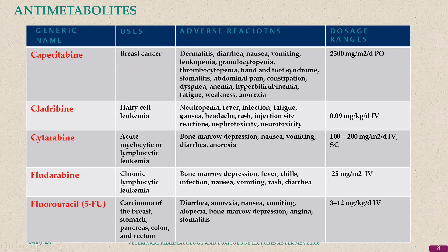Cladribine is used for hairy cell leukemia, and cytarabine is used especially in myelocytic anemia. Fludarabine is used in chronic lymphocytic leukemia. 5-fluorouracil is one of the commonly used antimetabolite drugs, used in breast cancer and stomach cancers. Esophageal cancers are very common and cause stenosis of the esophagus, making swallowing impossible.